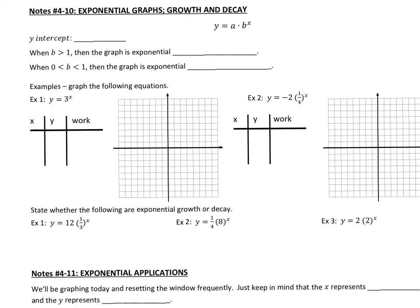For the next set of examples, it says state whether the following are exponential growth or decay. So if you remember from the beginning of the lesson, the number that represents exponential growth or decay is this number right here that's being raised to the x power. So in example 1, it is 1/3. 1/3 is between 0 and 1, so this represents decay.